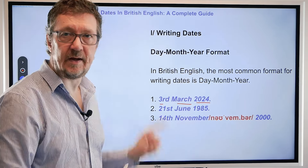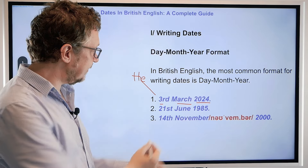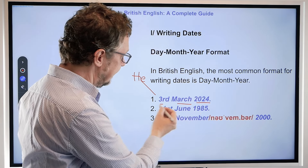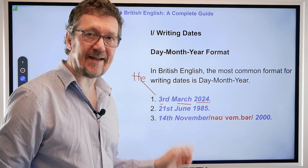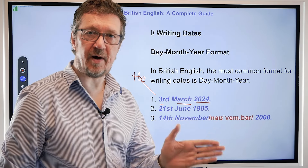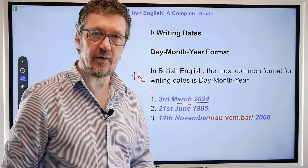When you're writing you don't put 'the', but when you're speaking we use 'the'. So when I write it, I write it like this. When I say it, I say 'the 3rd of March 2024'. The same with the next one: 21st of June 1985. When I say it, I say 'the 21st of June 1985'.